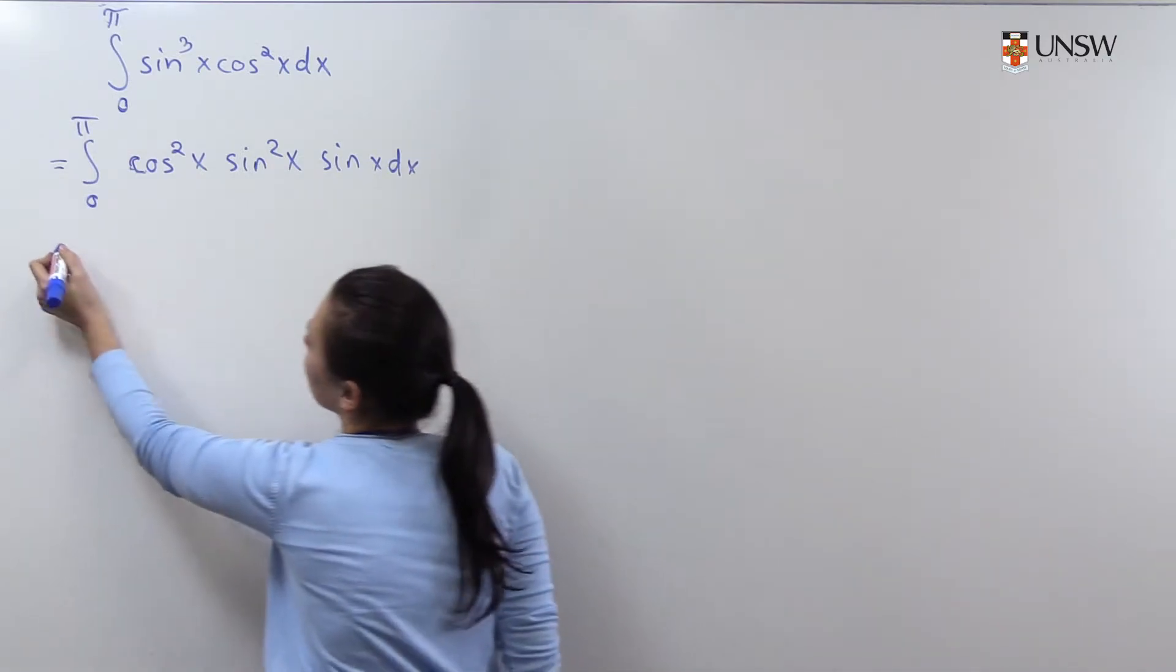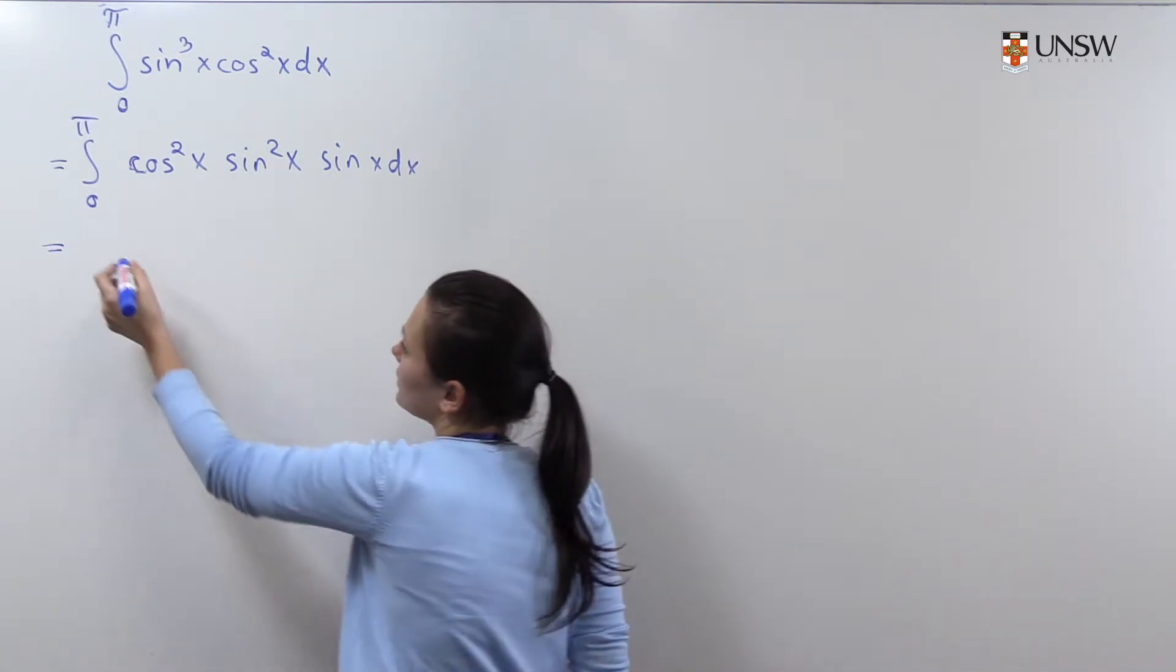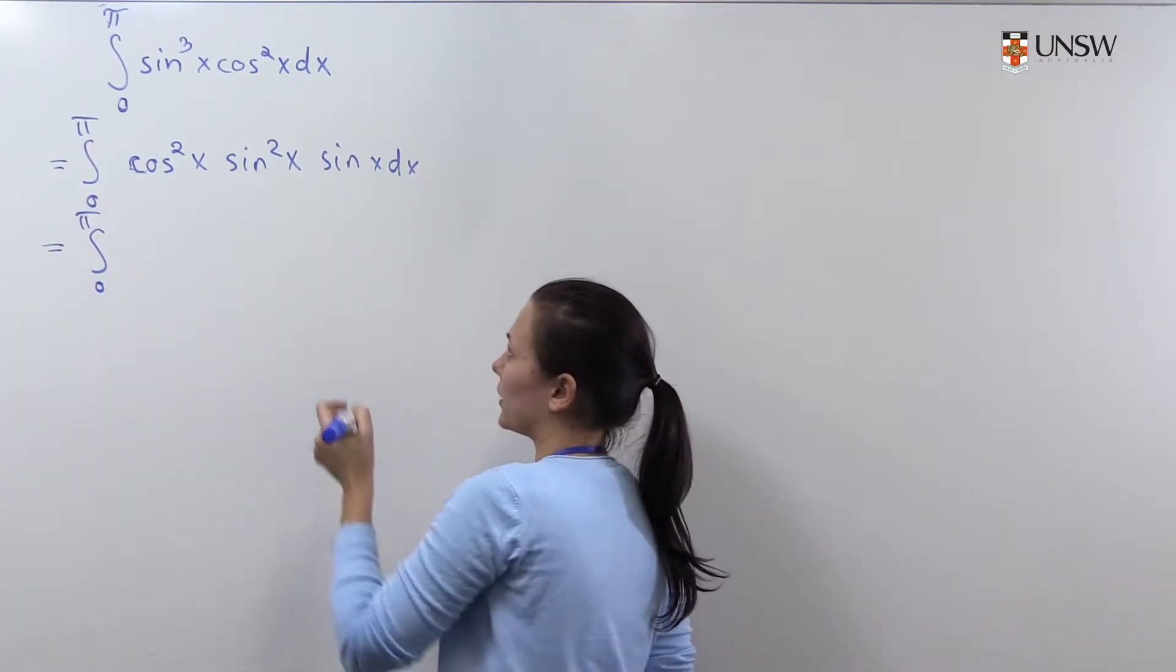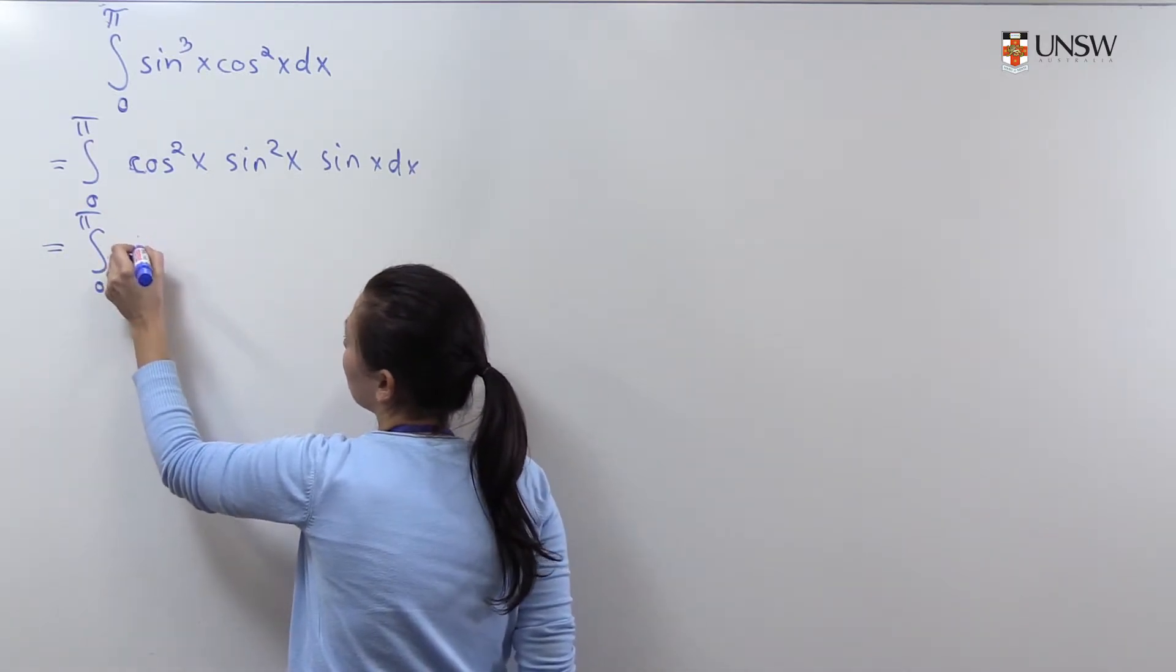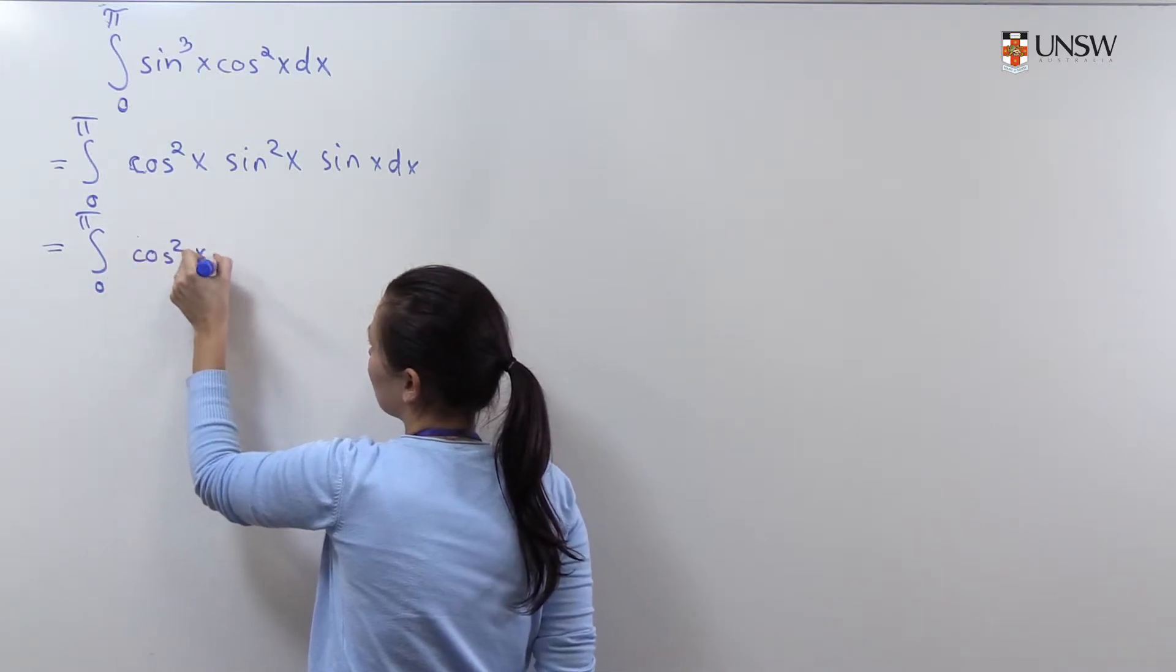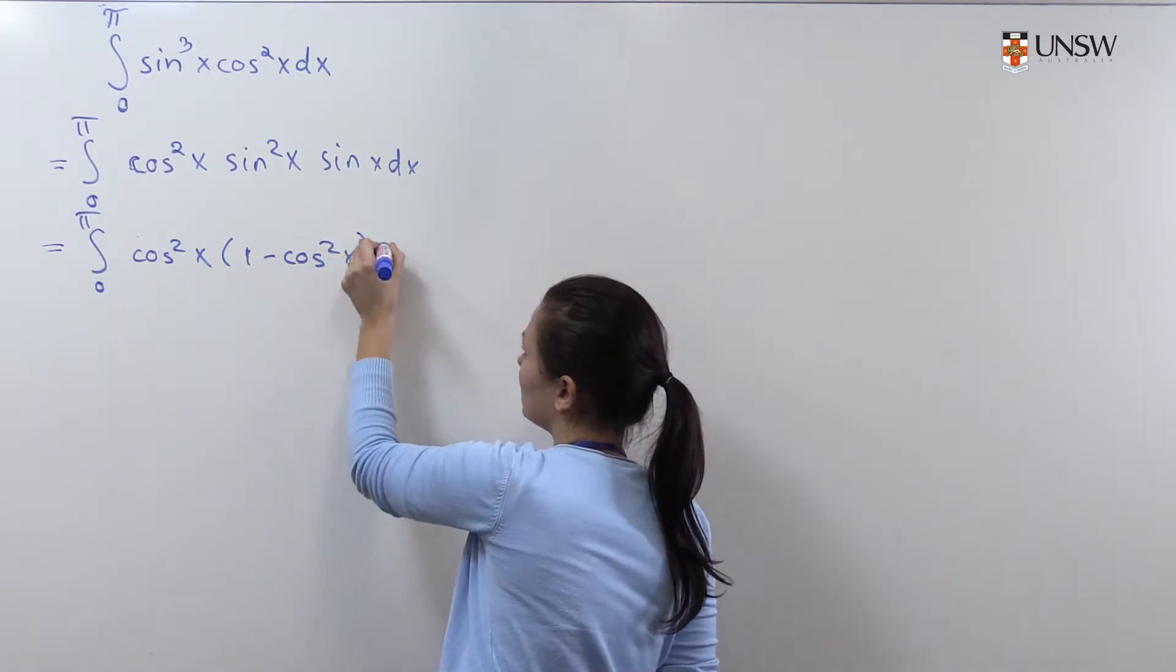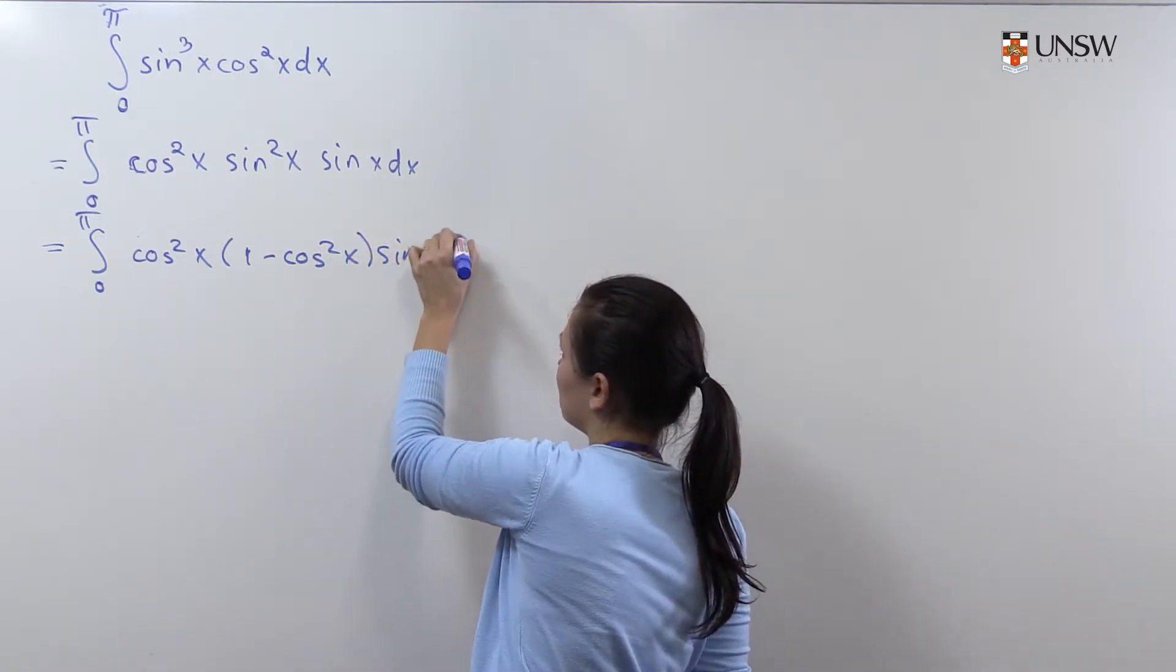Then using the trigonometric formulas we can write it as integral from 0 to π of cos squared x times (1 minus cos squared x) sine x dx.